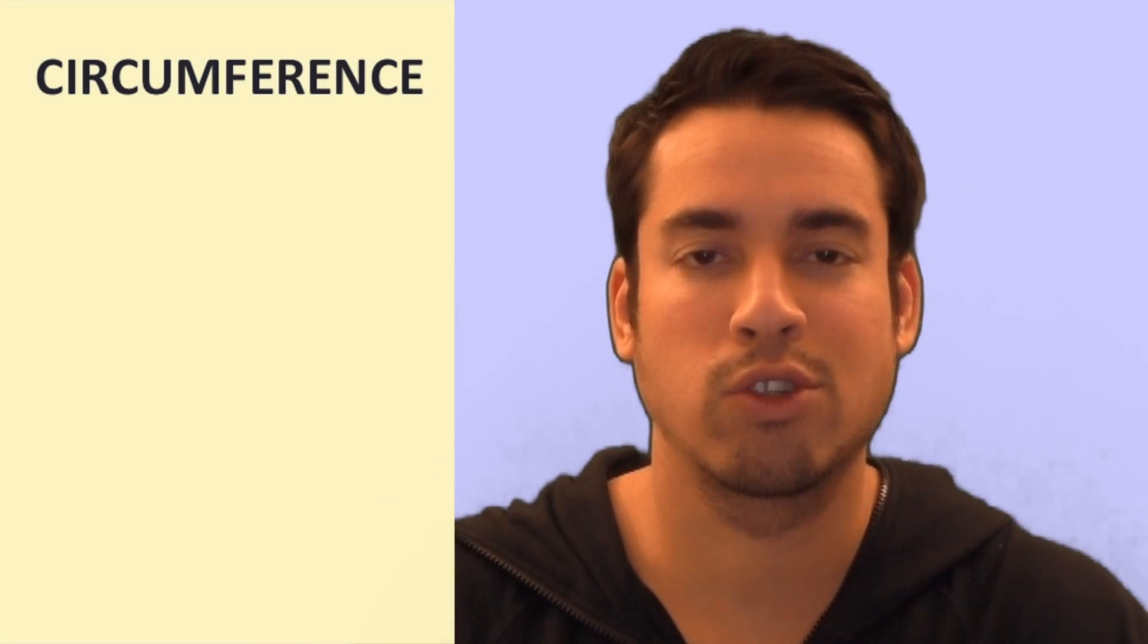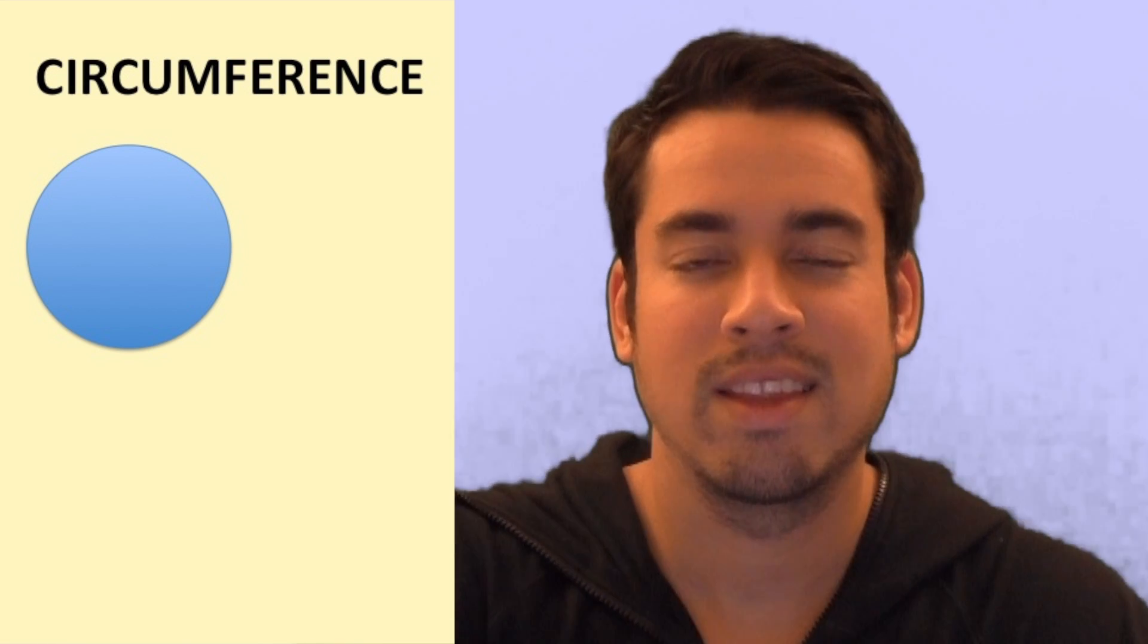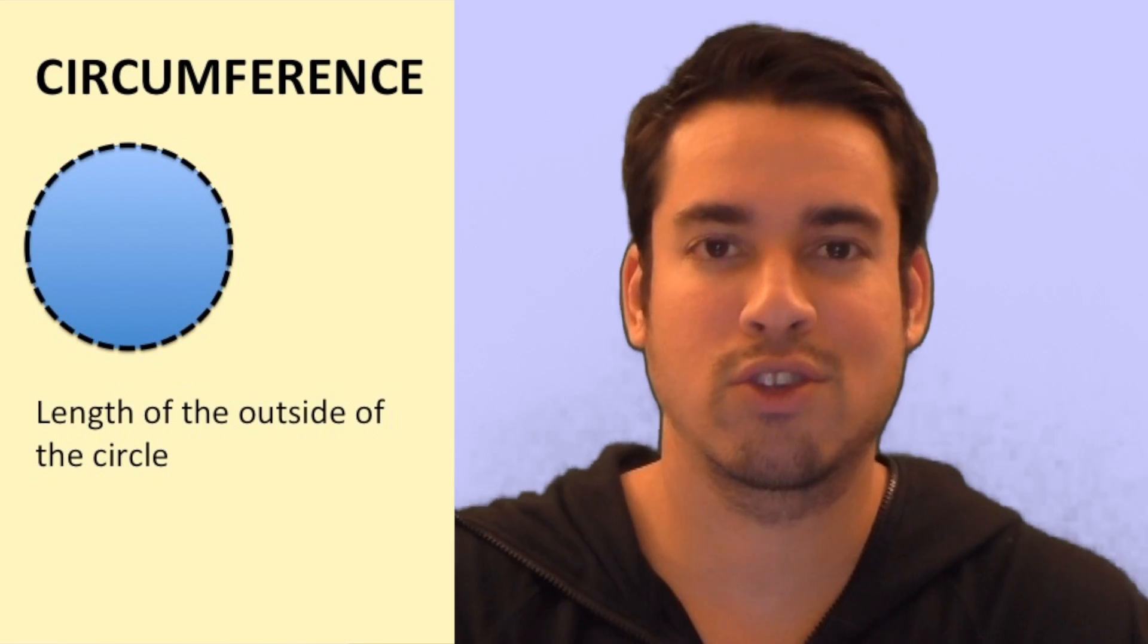The next thing you'll need to know for a circle is how to calculate the circumference of a circle. So first of all, what is circumference? Circumference is simply the length of the outside of the circle.